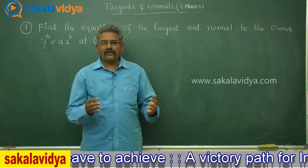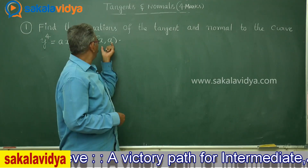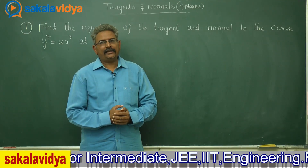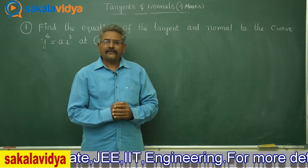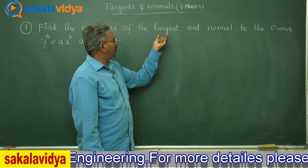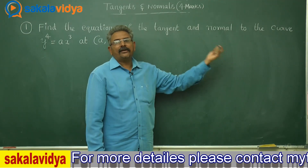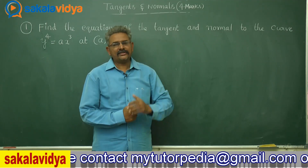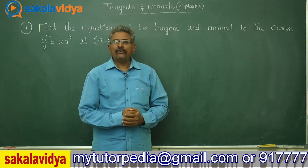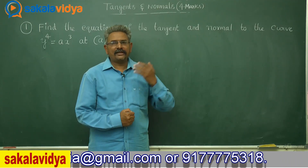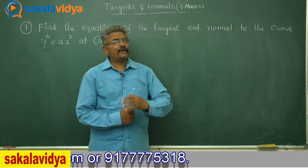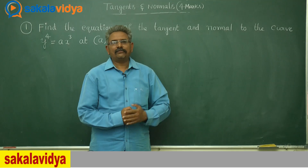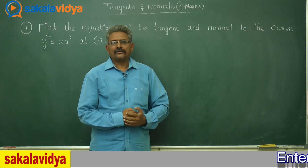The first step is to find dy/dx. At (a, a), let us find out the slope of the tangent, that is m = dy/dx at (a, a). After evaluating the slope of the tangent, the equation of the tangent can be obtained using y minus y1 equals m times x minus x1. For the normal, the formula is y minus y1 equals minus 1 by m times x minus x1, because the normal is perpendicular to the tangent.